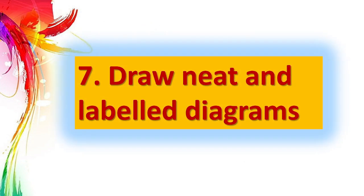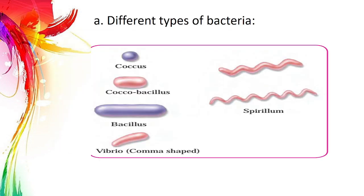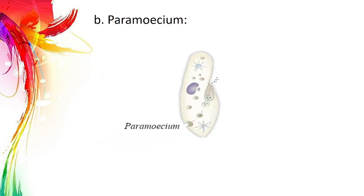Question 7: Draw neat and labelled diagrams. Part A: Different types of bacteria – Coccus, Coccobacillus, Bacillus, Vibrio, Spirillum. These are the different forms of bacteria to be drawn and labelled.